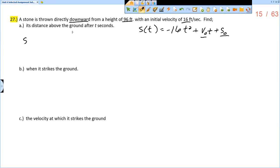And so the distance above the ground, s of t, is going to be negative 16t squared plus v sub 0. Now remember, it's thrown downwards, so that means the initial velocity is actually negative 16. So negative 16t plus s sub 0, so that would be 96.